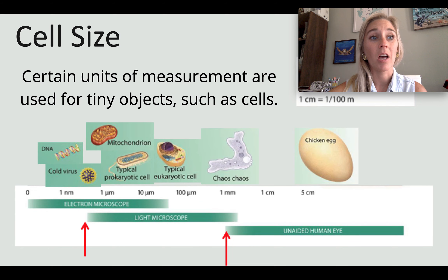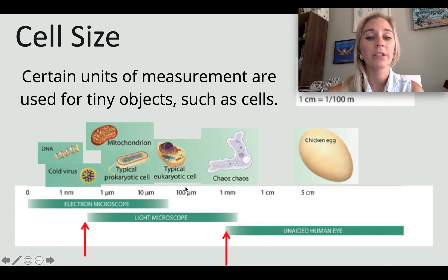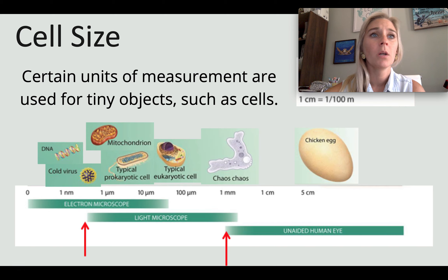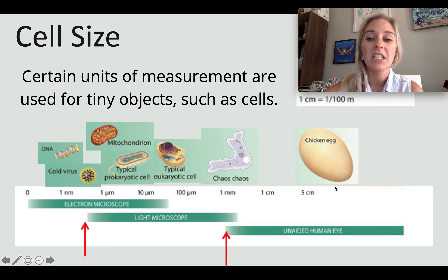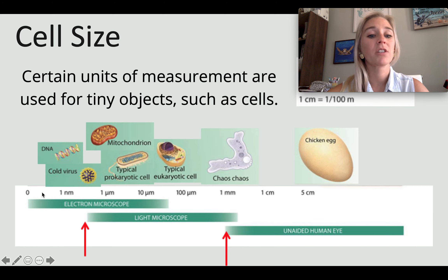Cell size is measured using units like nanometers (nm) and micrometers (µm). You can see a range of sizes from very tiny to something more visible to the eye. Some cells can be seen with a basic light microscope, like you'd use in a biology lab, while smaller things require a more specialized microscope.